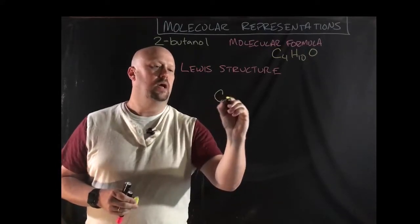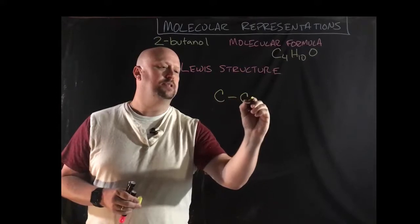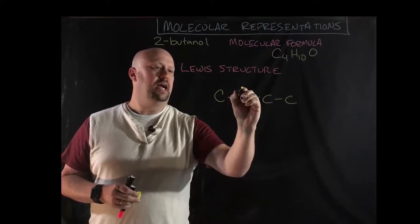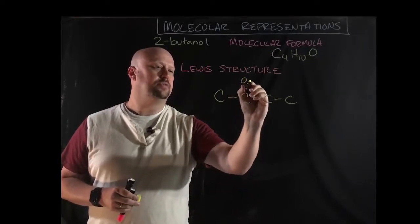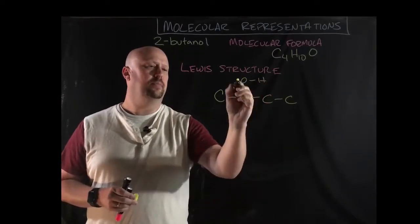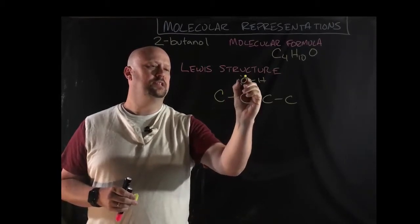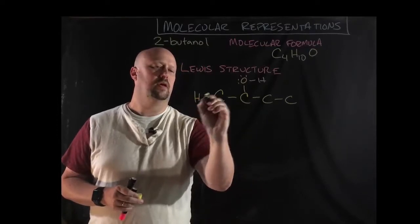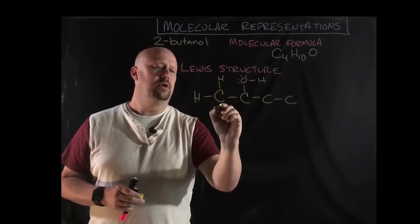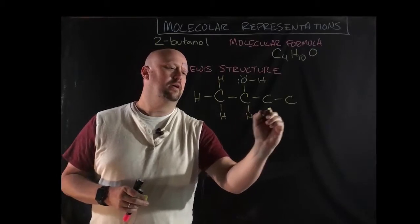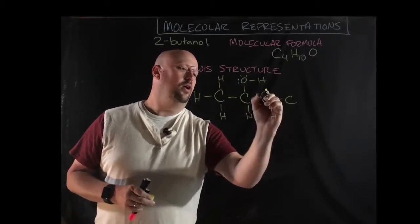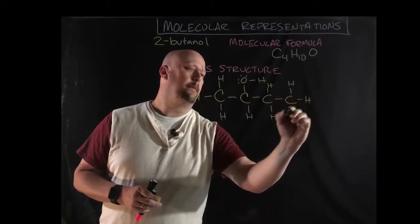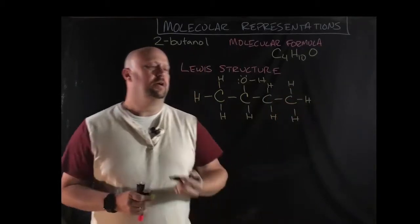So let me draw this Lewis structure and then we will talk about what the next type of representation is going to be. I said we had four carbons. I said that I had an OH on the second carbon. Since it's a Lewis structure I'm going to include my proper dots and then we're going to go back in and fill in all of the missing hydrogens.